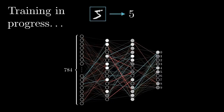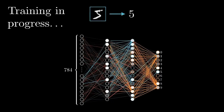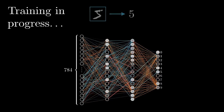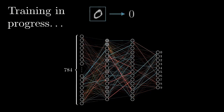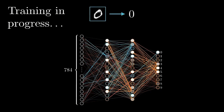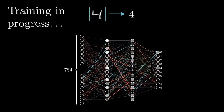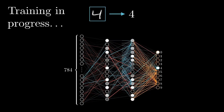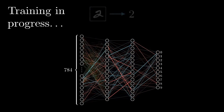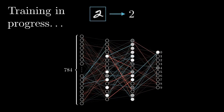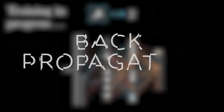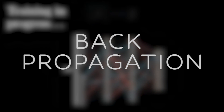How exactly does this network understand what we're showing it? The network requires training for this. We show the network lots of inputs and it maps these to outputs. The more images it sees, the better it learns. This method is called backpropagation.